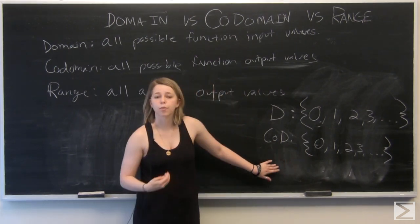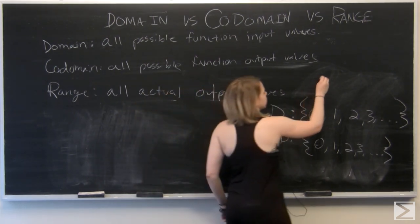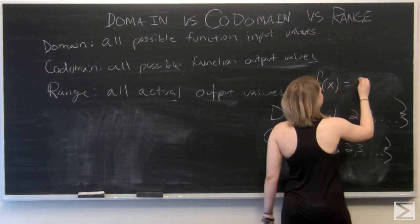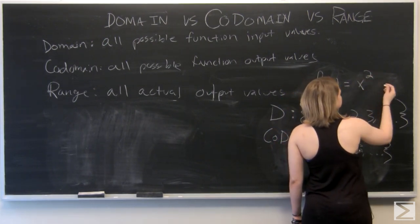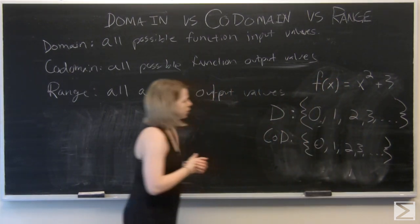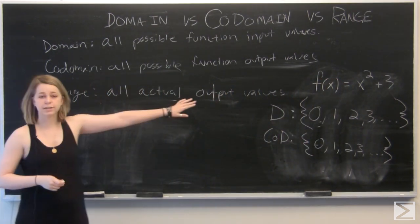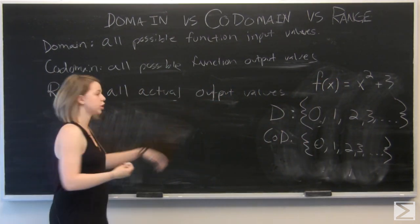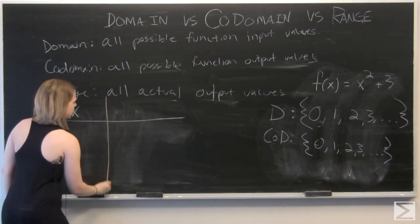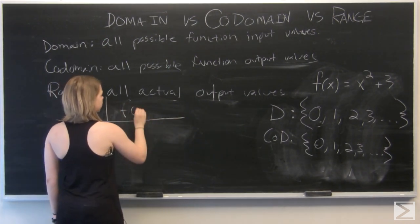And let's find out what our range will be if our function is f of x equals x squared plus 3. So we've got a different function. So let's start a new chart. So we've got our input values and our output values.